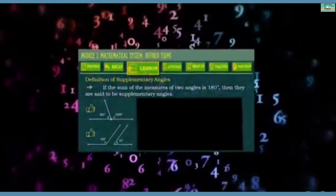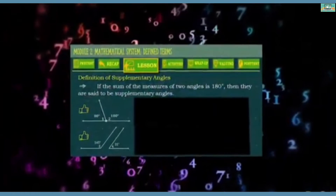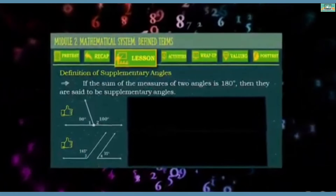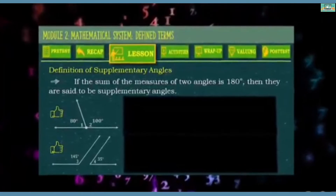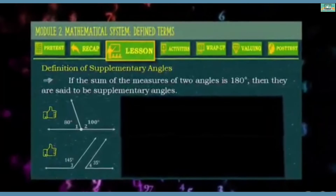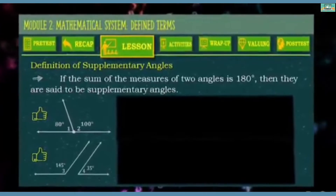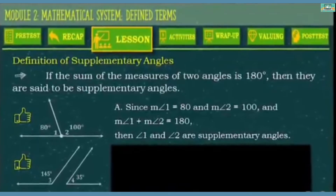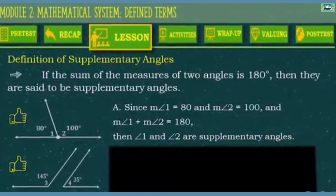Next are supplementary angles. If the sum of the measures of two angles is 180 degrees, then they are said to be supplementary angles. Is the given example a supplementary angle? Yes, correct! Since the measurement of angle 1 is equal to 80, and the measurement of angle 2 is equal to 100, and the measurement of angle 1 plus angle 2 equals 180 degrees, then angle 1 and angle 2 are supplementary angles.